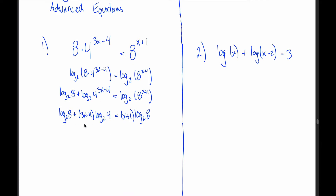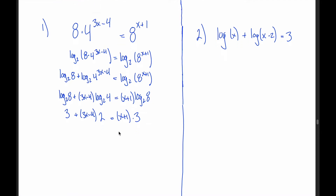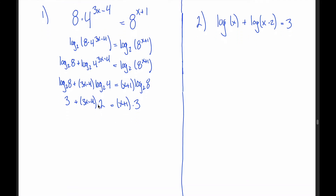Now we see the benefit of choosing log base 2. The log base 2 of 8 equals 3 because 2 cubed equals 8, and the log base 2 of 4 equals 2 because 2 squared equals 4. Substituting those values in, all the logs cancel out and I'm left with just a linear equation.